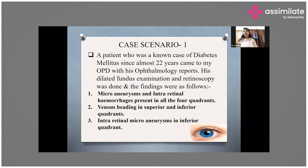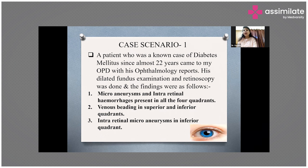Case scenario one: a patient who was a known case of diabetes mellitus since almost 22 years came to the OPD with his ophthalmology reports. His dilated fundus examination and retinoscopy findings were as follows — micro aneurysms and intraretinal hemorrhages were present in all four quadrants, venous beading in superior and inferior quadrants was present, and intraretinal microvascular abnormalities were present in the inferior quadrant of the eye.